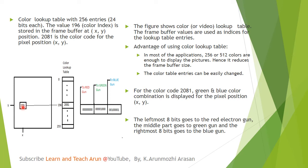In the color lookup table, the index number in the example is 196. The value stored in the frame buffer is 196, which is the index number into the color lookup table. At index 196, the color is looked up and stored for that pixel.